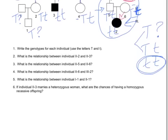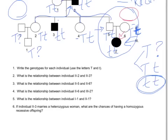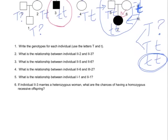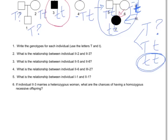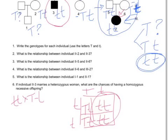If individual 2-3, so Generation 2, individual number 3, that's this person right here, if they marry a heterozygous woman. So we are at little t, little t, crossed with heterozygous, one big, one little. What are the chances of them having homozygous recessive offspring? Solve my Punnett square. And again, I have one half, 50%. Either one of those would work.